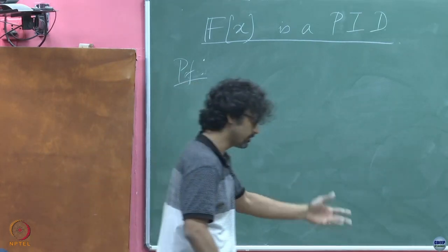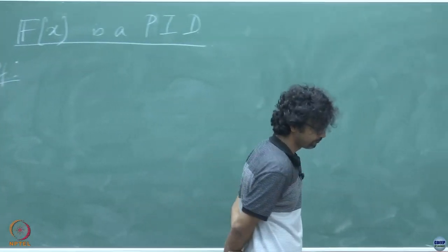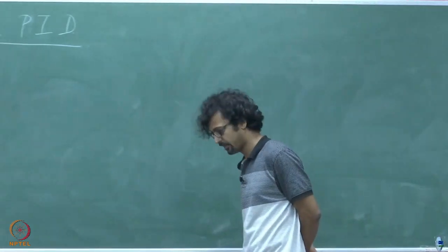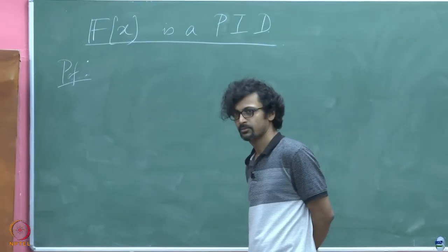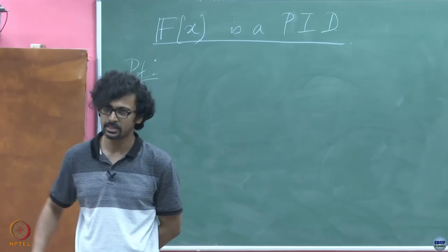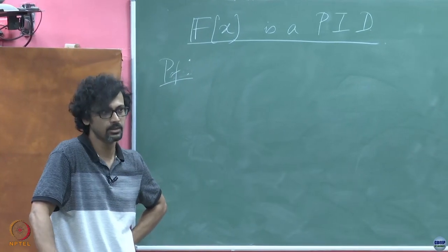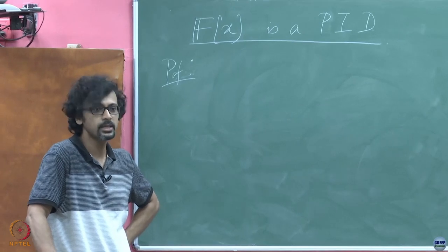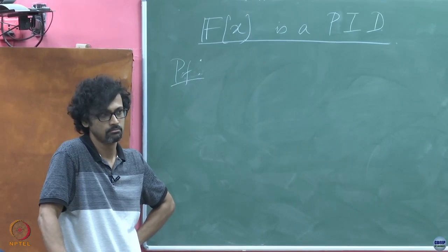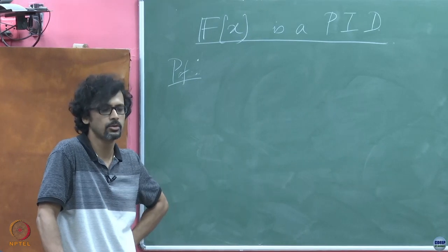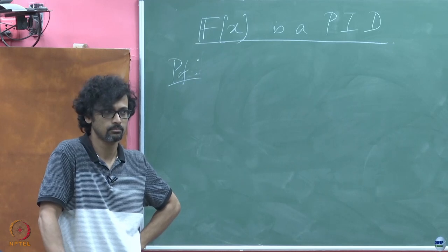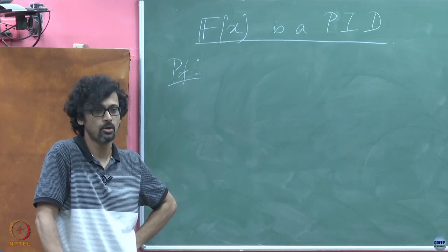Think about the analogy with numbers. Do you think even numbers in the ring of integers form an ideal? Even numbers do form an ideal. What is the generating element of the set of even numbers? Two. What is so special about two? It is a common factor.